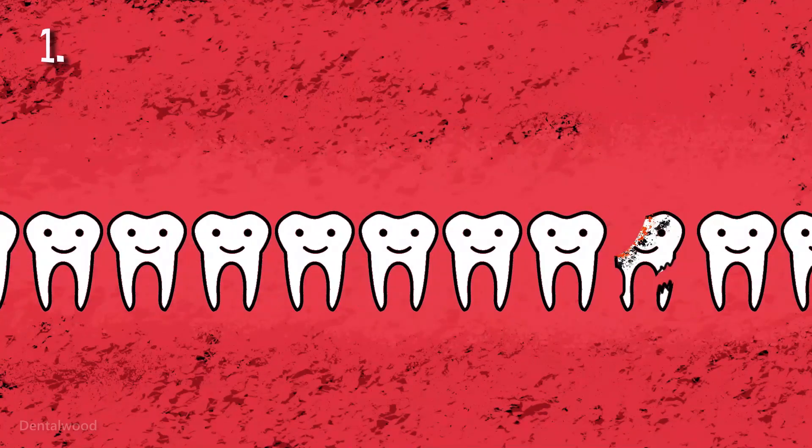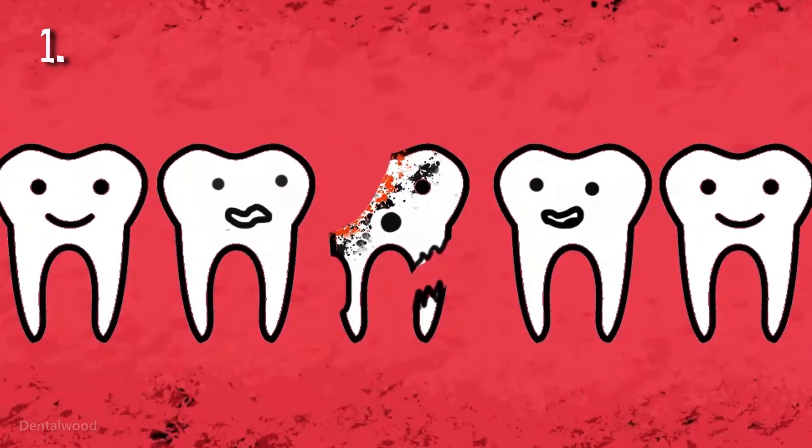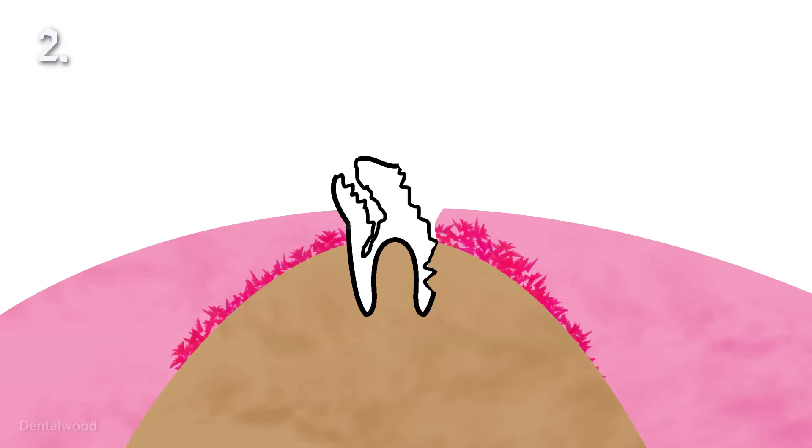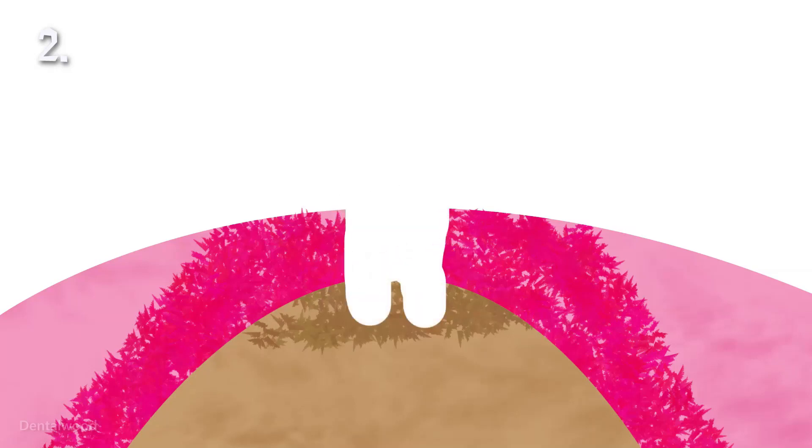You have to remove a tooth which is hopelessly carious and which cannot be saved by restorative procedures. Teeth associated with periodontal diseases and ended up in bone loss and reduced ridge surface area are indicated for extraction.